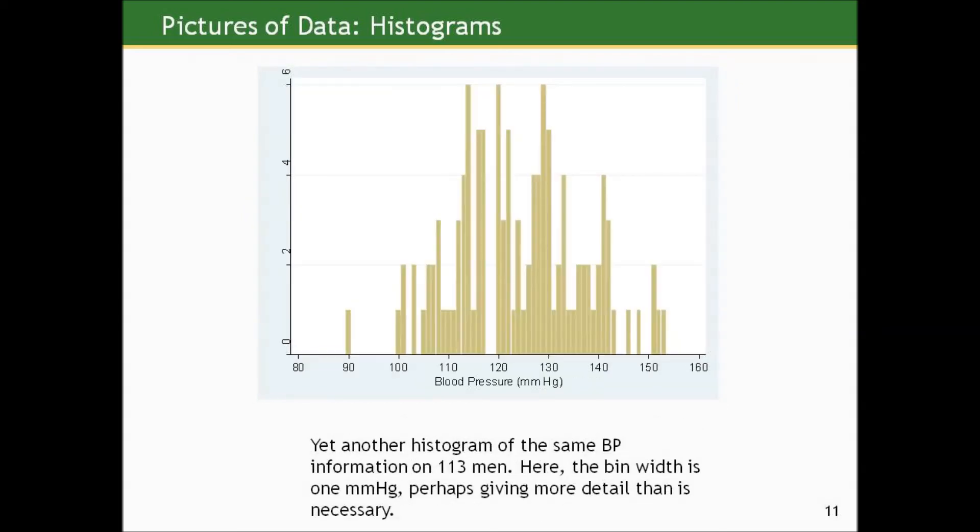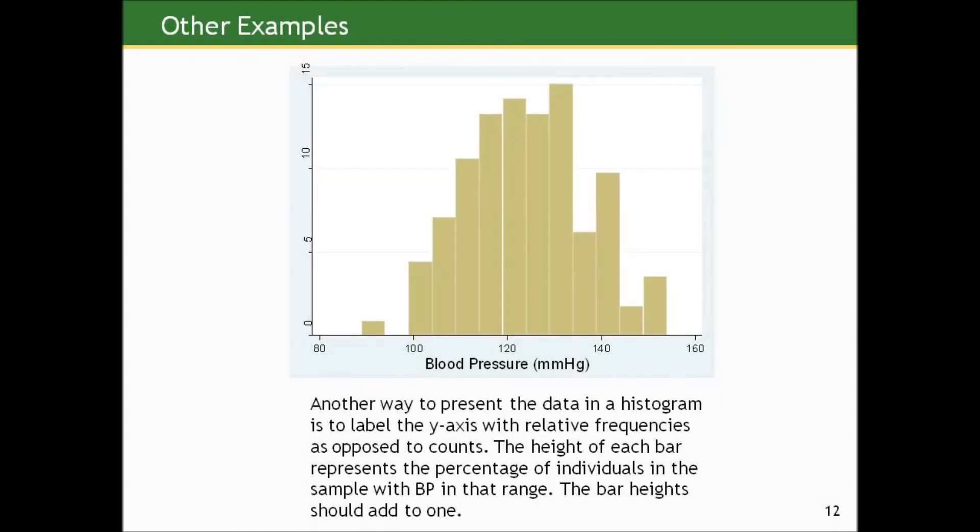Here, on the other hand, is a histogram with the same blood pressure information with 113 men. But here, each of the bin width is one millimeter mercury. And you can see this is almost too fine to actually get the essence. Remember, we're about data summarization to some extent, and this may basically give us the same information as looking at the 113 numbers on their own. So you can see that we can oversimplify by making the bins too wide or make it too complicated by making them too thin. And we'll talk about the optimal size. But rest assured, the computer will choose that for you unless you specify otherwise.